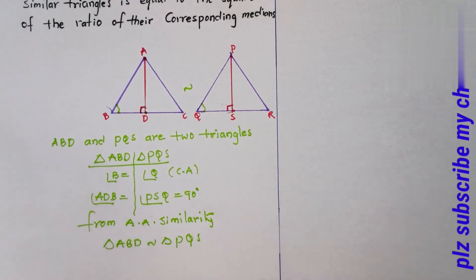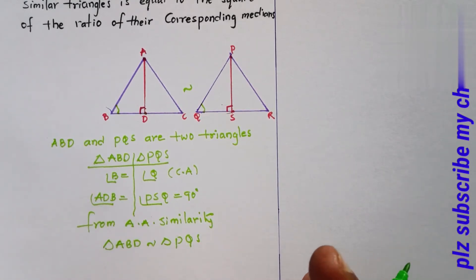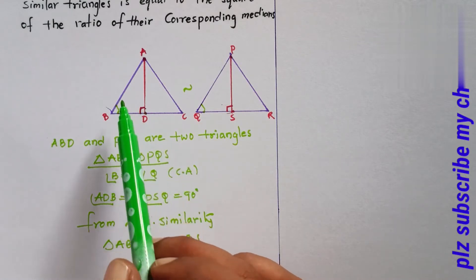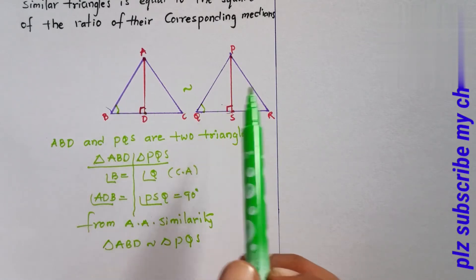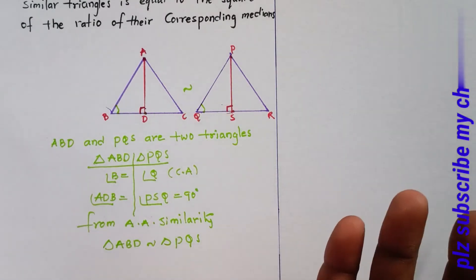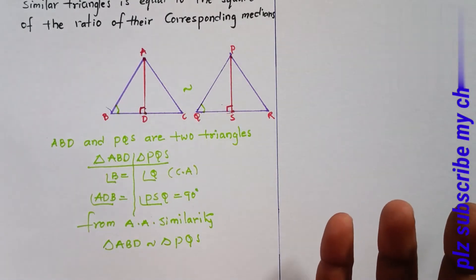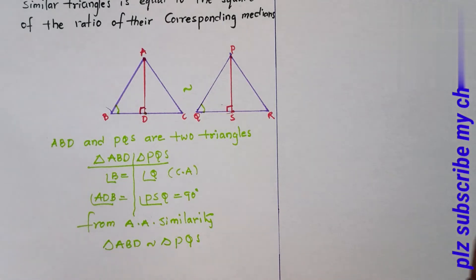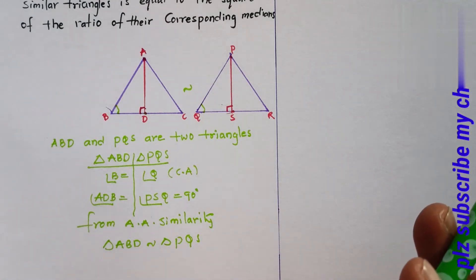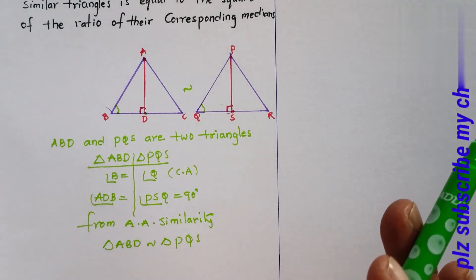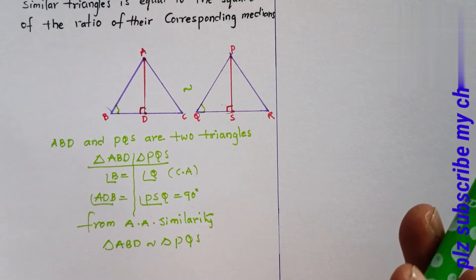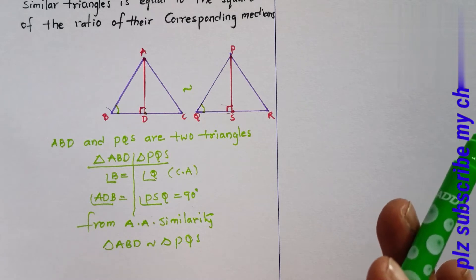Since the triangles are similar, corresponding angles are equal and corresponding sides are in the same ratio.